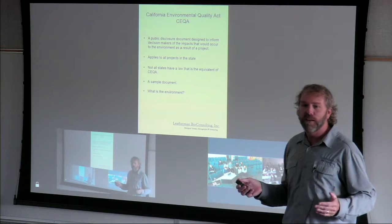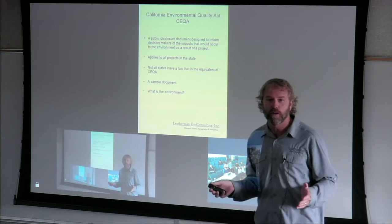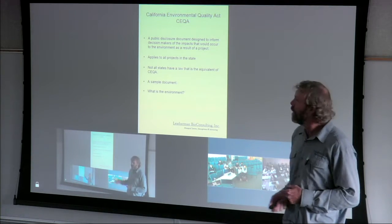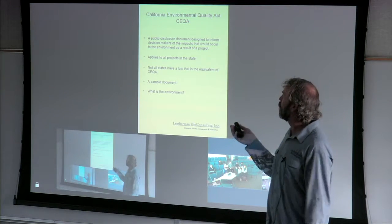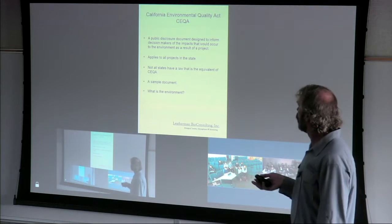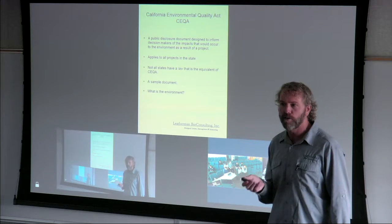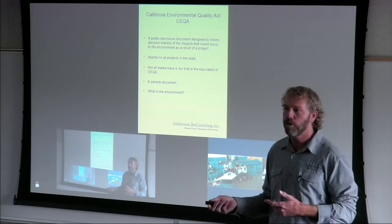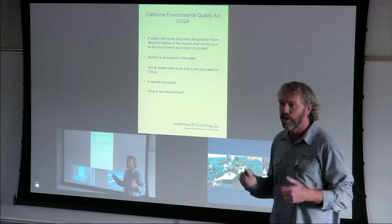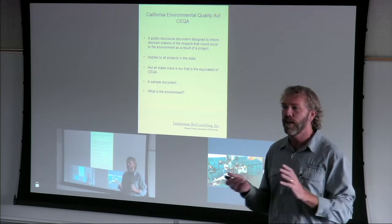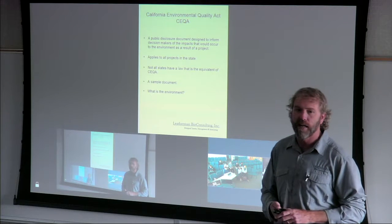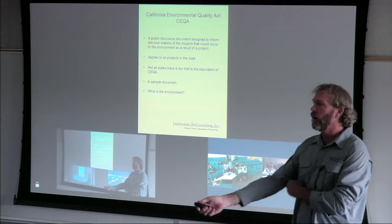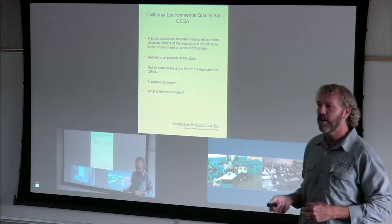That was a brief overview of NEPA, which involves all projects associated with any type of federal permit. Now we'll talk about the California Environmental Quality Act, or CEQA. CEQA results in a public disclosure document designed to inform decision makers of the impacts that would occur if they were to approve the project. It's very similar to NEPA — the idea is to collect information and give it to the people making the decision so they make an informed choice. This applies to all projects in the state where there is a lead agency approving the project.